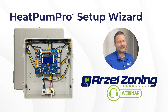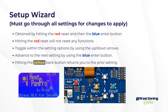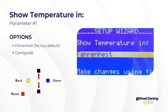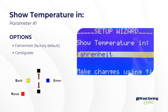When you first power the panel up you'll see the startup screen saying 'Heat Pump Pro by RZL.' Press the blue enter button to enter setup. The first parameter is 'Show Temperature In' — select Fahrenheit or Celsius. For American markets we primarily use Fahrenheit; Canadian markets primarily use Celsius.